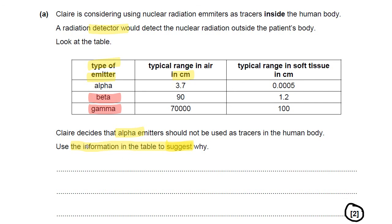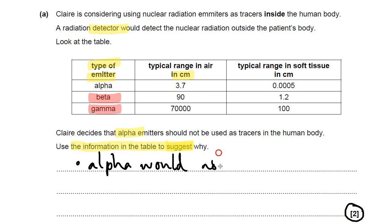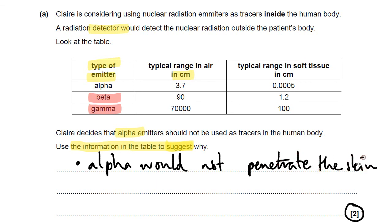Your first point is that alpha would not penetrate the skin — our skin is thicker than alpha's range in soft tissue. Alpha would not penetrate the skin, and why does that matter? It matters because if it doesn't penetrate the skin, it will not reach the detector.